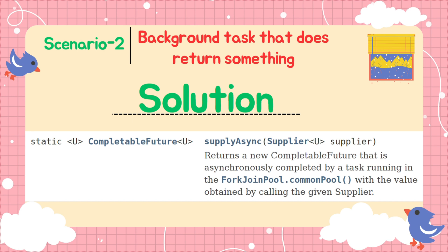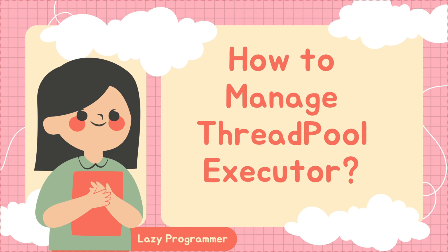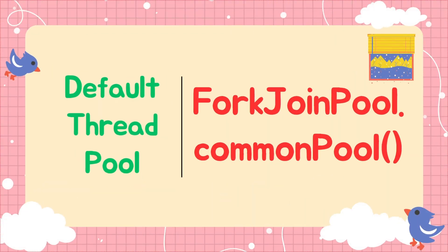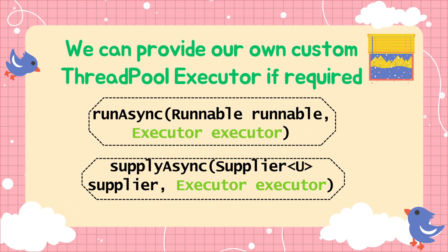Have you noticed that we are not providing any thread pool executor for running the tasks? By default, the thread pool used for executing these asynchronous tasks is the common pool from ForkJoin. If you want to learn more about ForkJoin's common pool, please check out the video in the top right corner. If we want, we can provide our own thread pool — both runAsync() and supplyAsync() have overloaded methods where we can pass an Executor. Almost all functions have this variation.